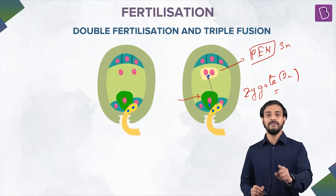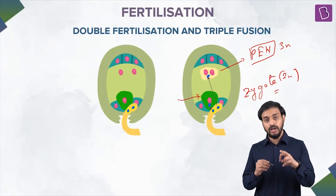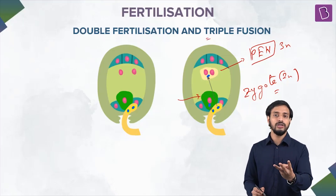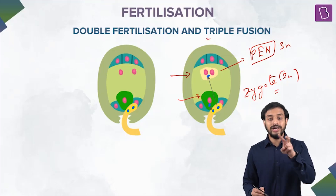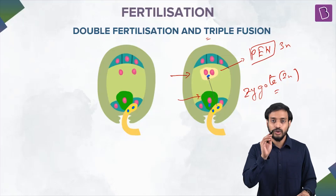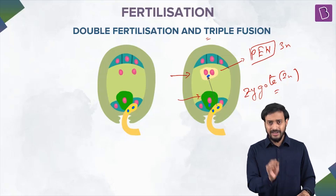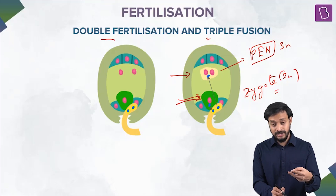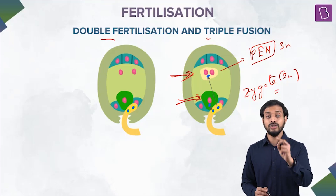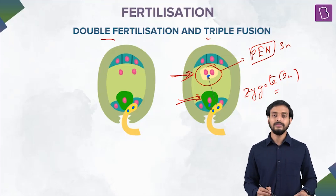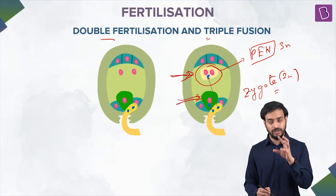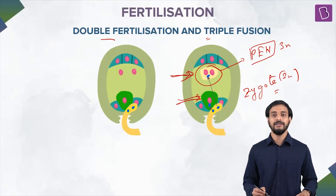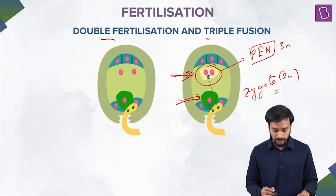This is termed double fertilization — because two male gametes are fertilizing: one fertilizes the egg, and the other fertilizes the central cell. It is also known as triple fusion — because three nuclei are fusing together: the male gamete fuses with the two polar nuclei, forming the primary endosperm nucleus (PEN), which is 3N.